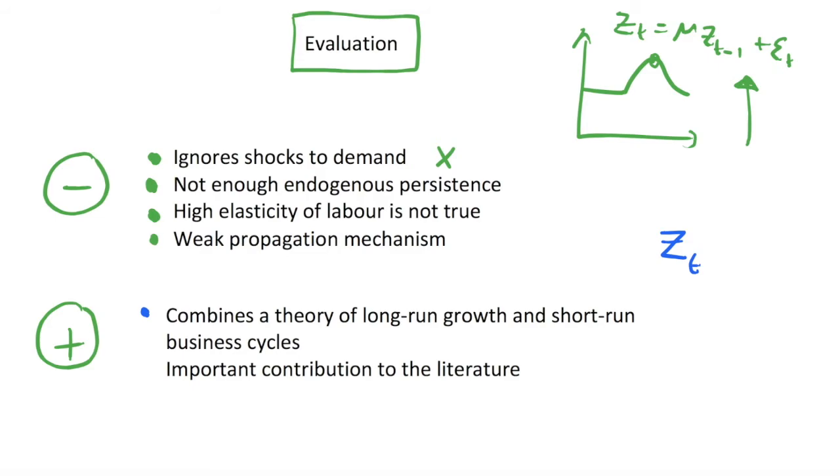Our driver of shocks is zt - it's our technology or productivity parameter. We know that long-run growth we tend to assume comes from increases in technology and increases in long-run productivity. So it's nice that we are building our long-run models from an increase in technology and that we can get some short-run fluctuations from this technology as well. This merges our long-run and short-run growth very nicely. Even if we do decide that shocks to demand are important, it is very nice to understand the dynamics of our productivity shocks as well.